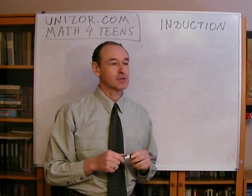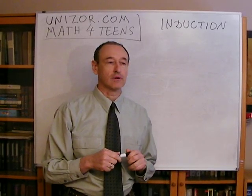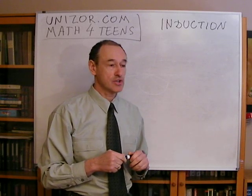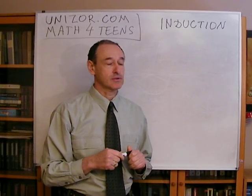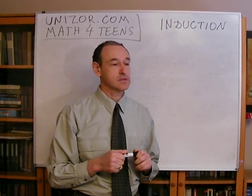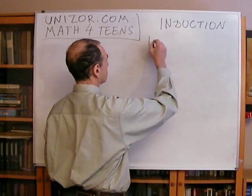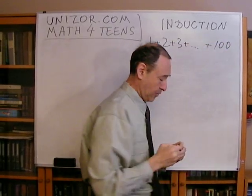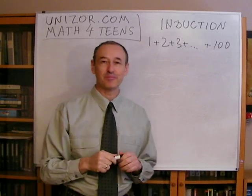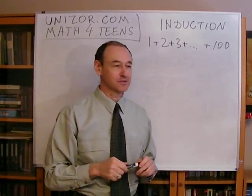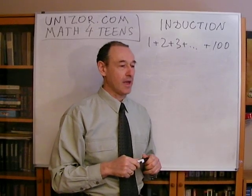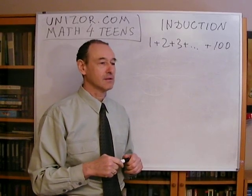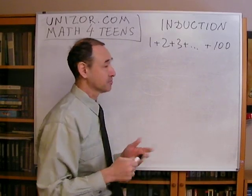There is a legend about German mathematician Carl Friedrich Gauss. When he was a child, apparently his teacher asked the class to add numbers from 1 to 100. Maybe the teacher wanted students to keep quiet for a while, so it would take them some time to add all these numbers. But quite suddenly the teacher saw that young Carl raised his hand and gave the right answer.